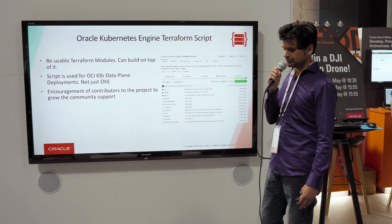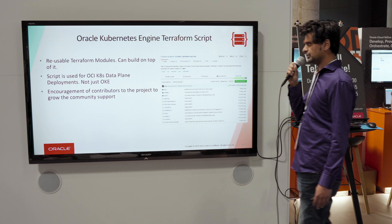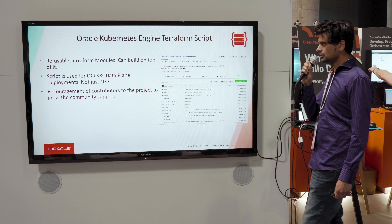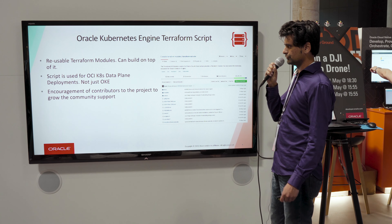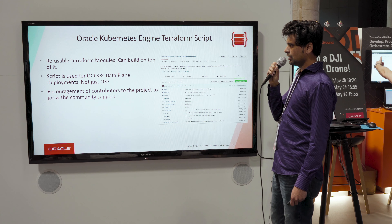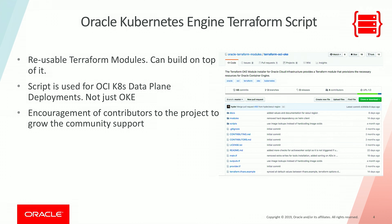Right now we have Calico and Helm in there, but we want to maybe add the Prometheus operator, and that's something we're looking to do moving forward. The script is not only used for the managed Kubernetes service — we have customers that manage their own full Kubernetes clusters and they use the data plane side of the script as well. So it's kind of multipurpose in that way.